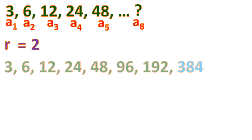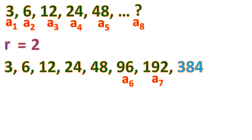Let's continue from 48: 48 times 2 is 96, that's the 6th term; 96 times 2 is 192, that's the 7th term; and 192 times 2 gives the 8th term, which is 384. That's not hard to find.